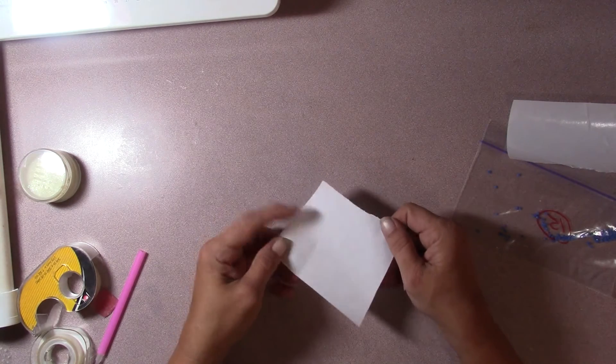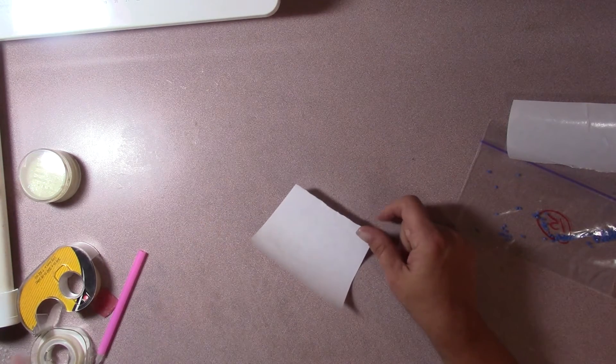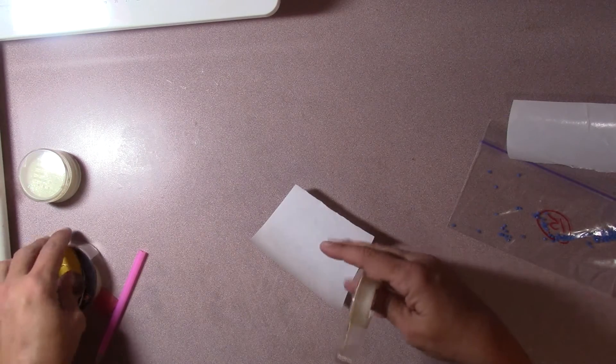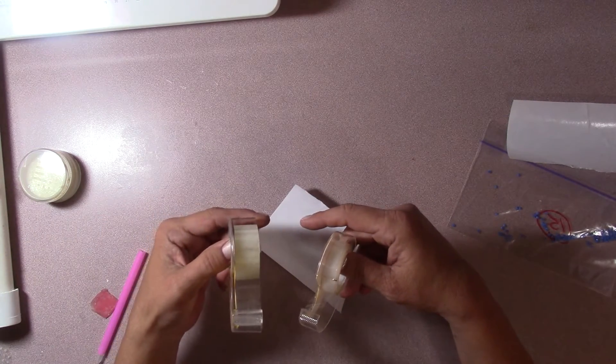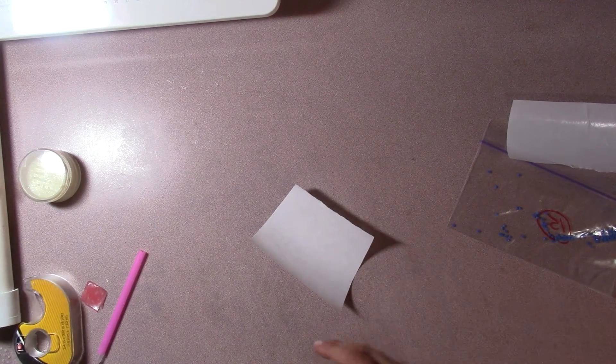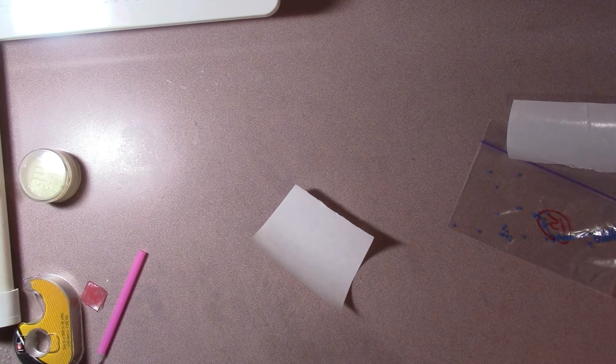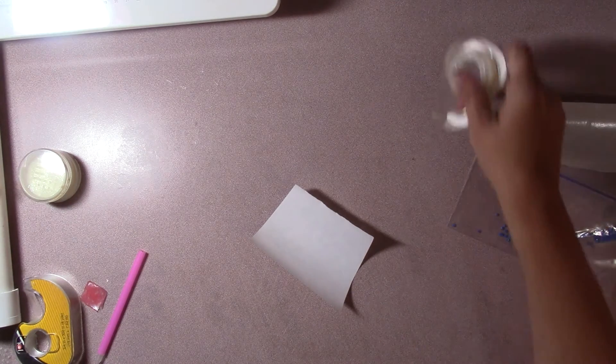First, you need some freezer paper, and you need some double-sided tape. Now, they come in different widths and I thought we could make our own decorative tape with this.